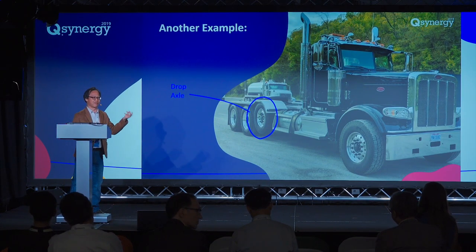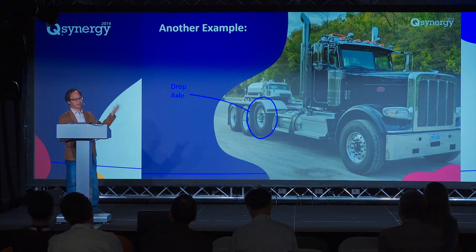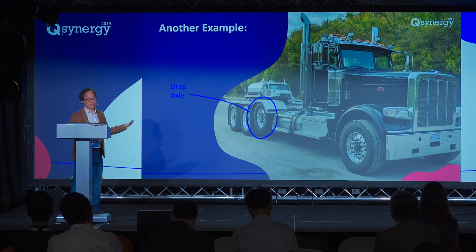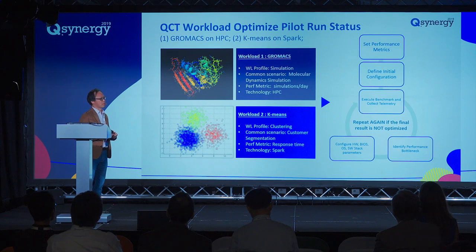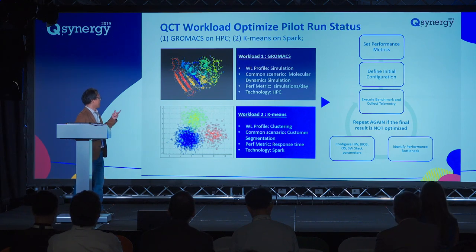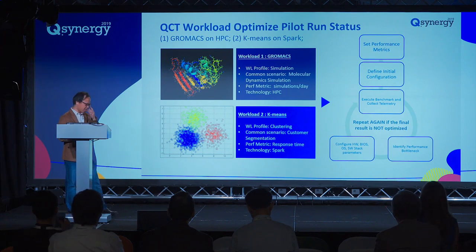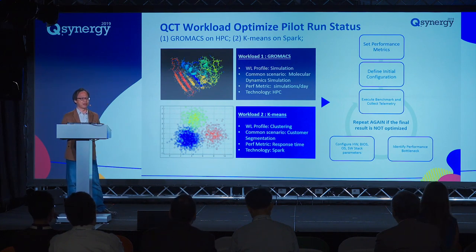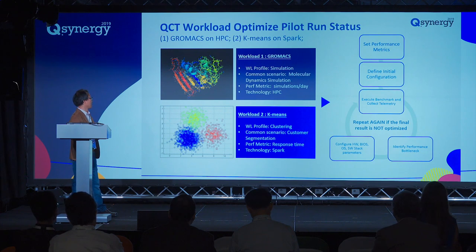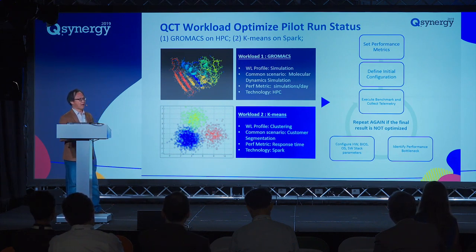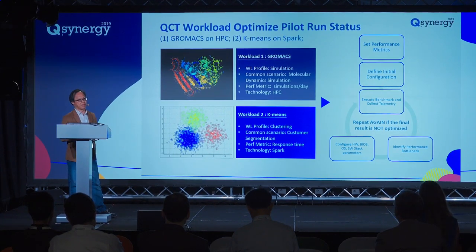As a cloud or software company, you may not have the capability or knowledge to fine-tune the hardware and firmware. Right now we already have two workload optimization POCs. The first is GROMACS, and the other is K-Means. GROMACS is a molecular dynamics simulation software which can simulate the interaction among millions of particles — very useful for the biochemical industry. We want to run as many simulations as possible per day, so our performance metric is simulations per day. K-Means is a clustering software: when you have millions of user data points and don't know how to categorize them, you can use K-Means. K-Means runs on Spark, so it's in-memory computing.